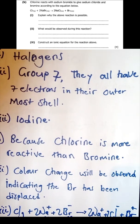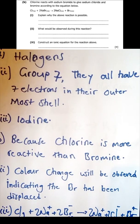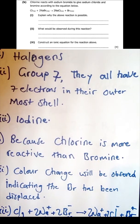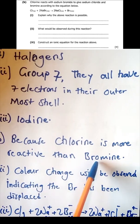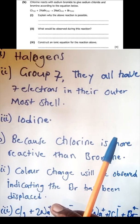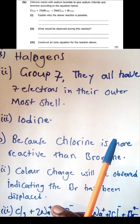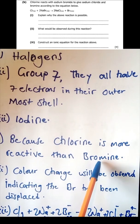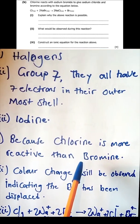Chlorine reacts with sodium bromide to give sodium chloride and bromine. Explain why the above equation is possible. This equation is possible because chlorine is more reactive than bromine, so it can displace bromine and take the sodium from sodium bromide to become sodium chloride. Because chlorine is more reactive than bromine, that equation is possible.